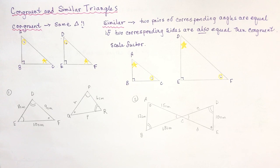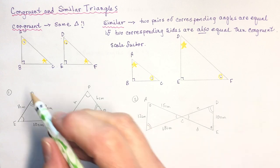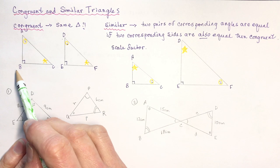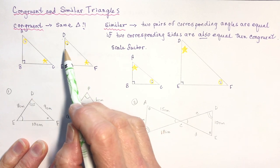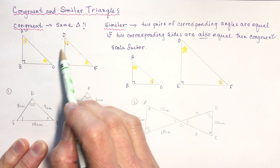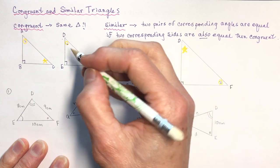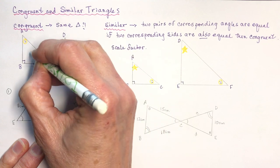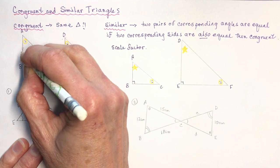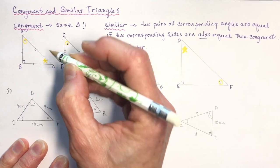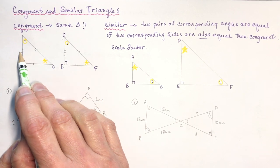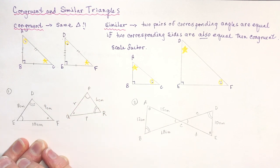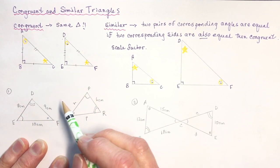Looking at this first triangle, we can see that these two triangles are congruent. Why are they congruent? Because they're exactly the same. The angles are the same in all three corners and the side lengths are also all the same when you measure them. When I mark them like this — if I put three tick marks here and three here — that means these sides are the same length. So that would mean they're congruent.